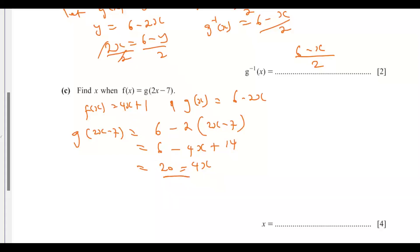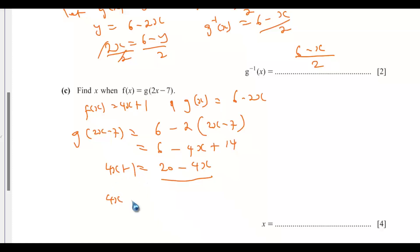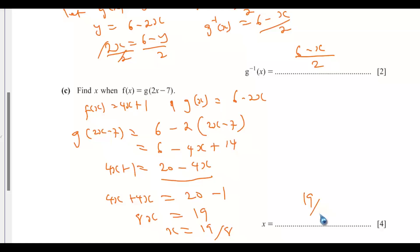Setting this equal to f(x): 20 minus 4x equals 4x plus 1. Adding 4x to both sides and rearranging: 20 minus 1 equals 8x, so 8x equals 19, which means x equals 19/8.